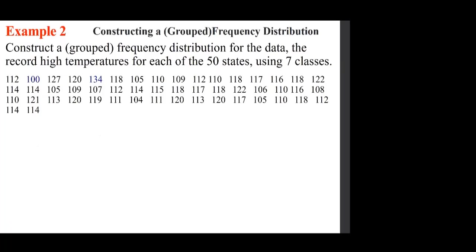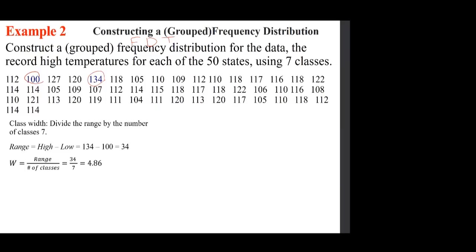Let's construct a frequency distribution table for the record high temperatures for each of the 50 states using seven classes. I have marked the smallest and largest values. We calculate the width roughly as the largest minus the smallest — that is called the range — divided by seven. So we calculate the range and divide by seven.